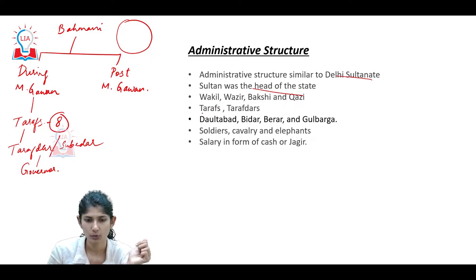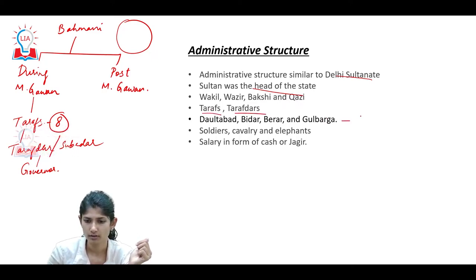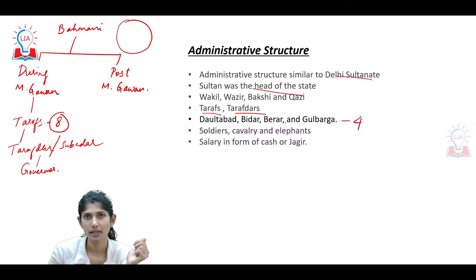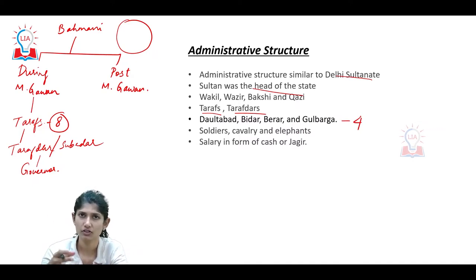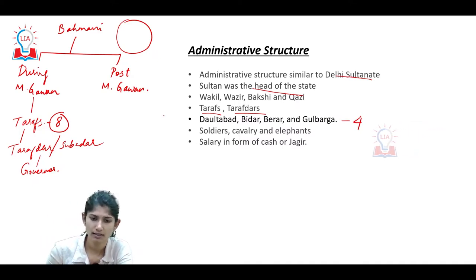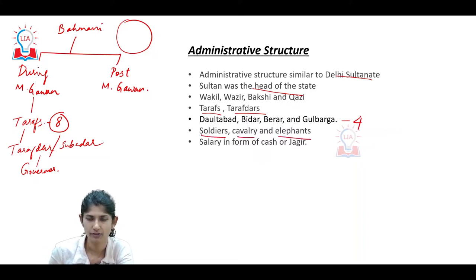The four Tarafs were Daulatabad, Bidar, Berar, and Gulbarga. The administrative structure also included a strong military, which comprised soldiers, cavalry, and elephants.